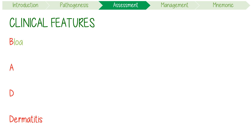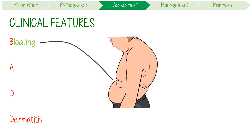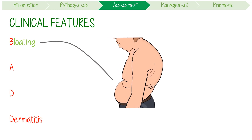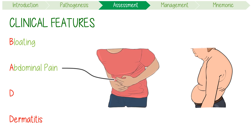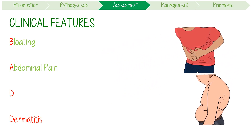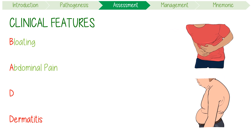Its clinical features include BAD Dermatitis. B stands for bloating — long-standing feelings of abdominal distention should really make you think about screening for celiac, as it's often missed in childhood. A stands for abdominal pain, which is often a crampy discomfort felt after ingestion of gluten. D stands for diarrhea, which is often chronic or intermittent.